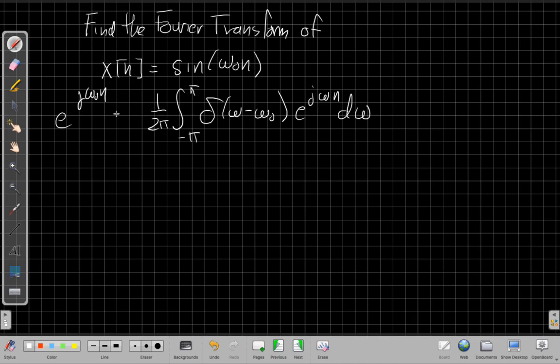Well, if I want to make a sine of this, we know that I need to have 1/(2j) times e^(jω₀n). And I have to have a -1/(2j) times e^(-jω₀n).